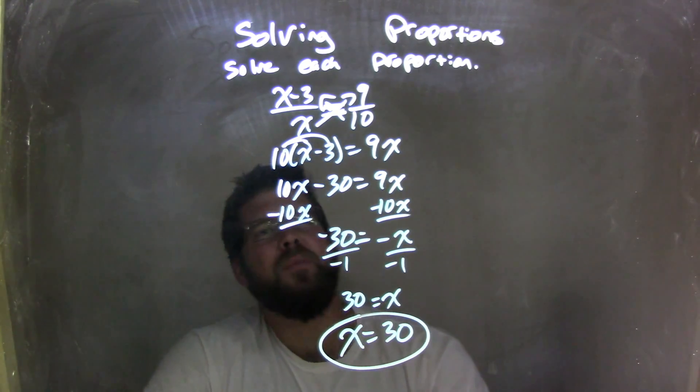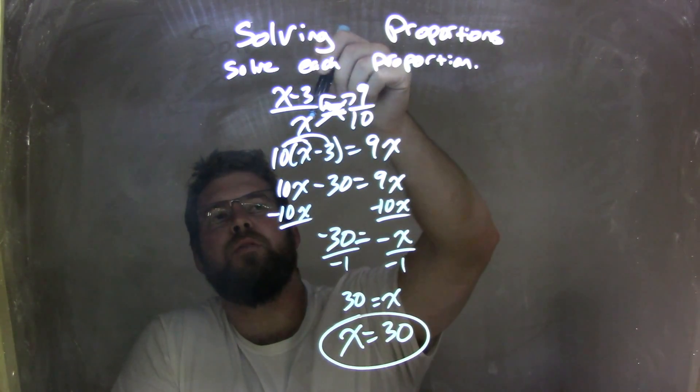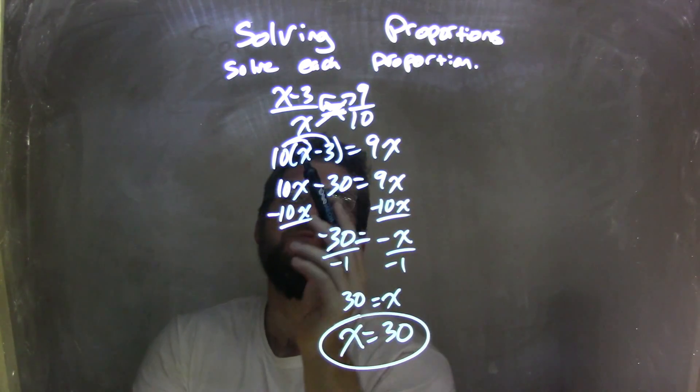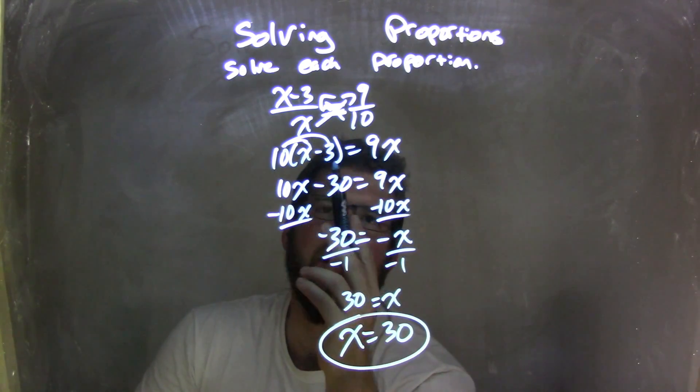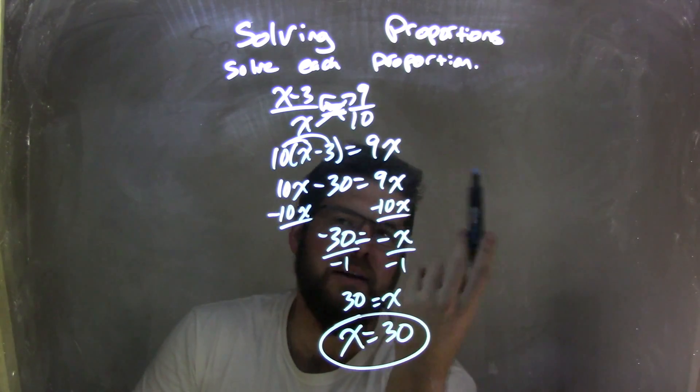Very quick, but let's recap here. We have x minus 3 over x equals 9 over 10. I cross-multiply it, giving me 10 times, in parentheses, x minus 3 equals 9x, or 9 times x.